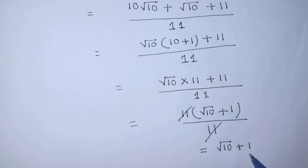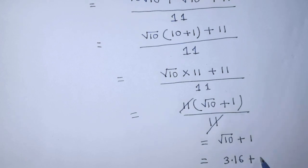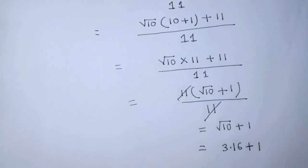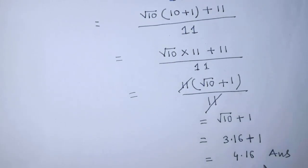Square root of 10 is 3.16, plus 1, so if you add both numbers you get 4.16. Our answer is complete. If you like this video and this trick, please support me and subscribe to my channel. Thank you, bye bye.